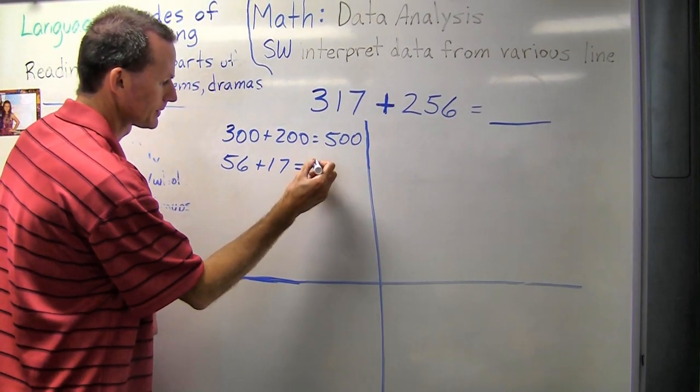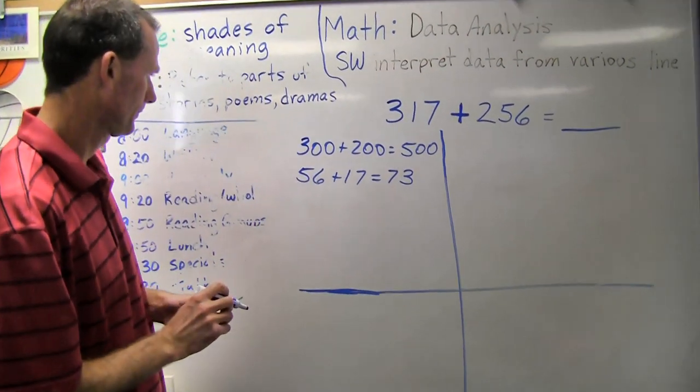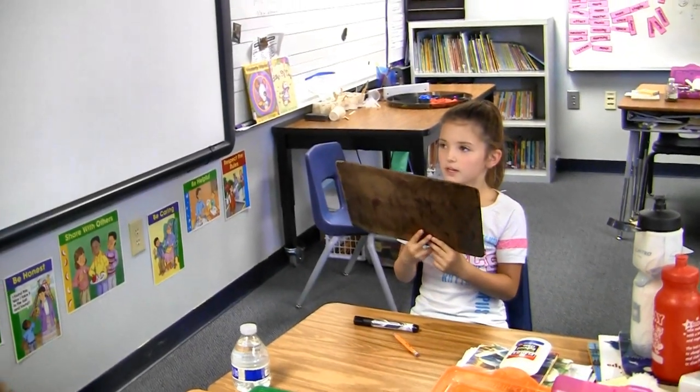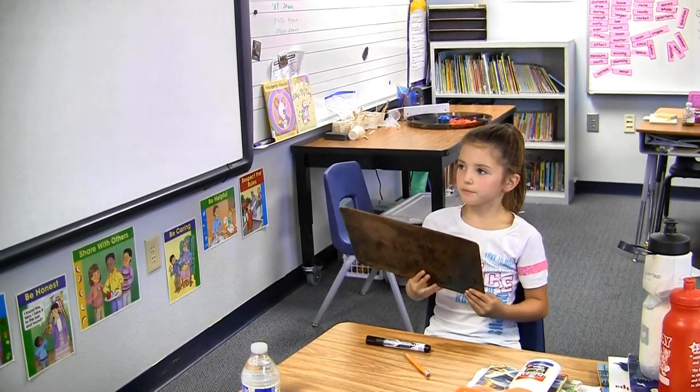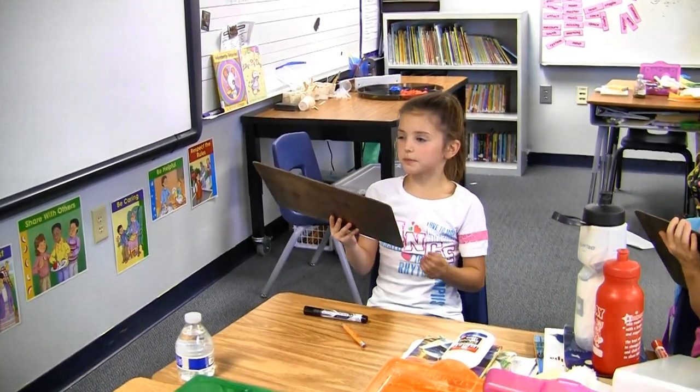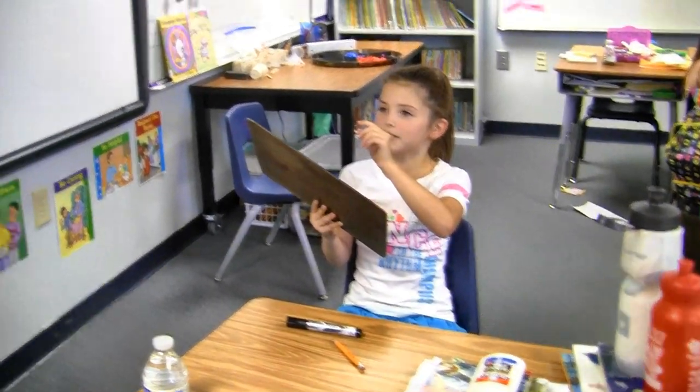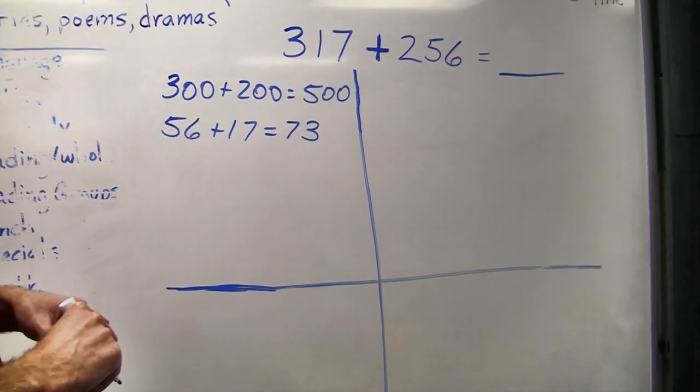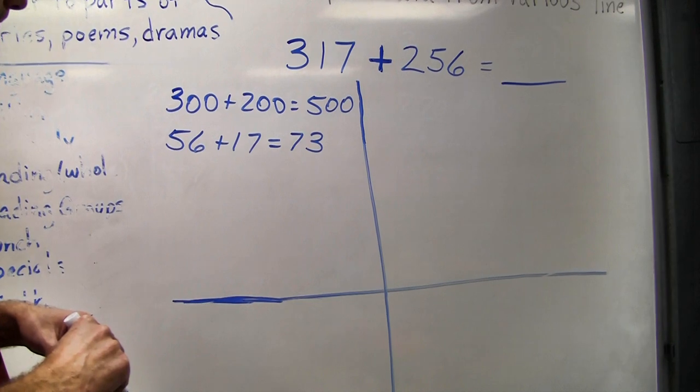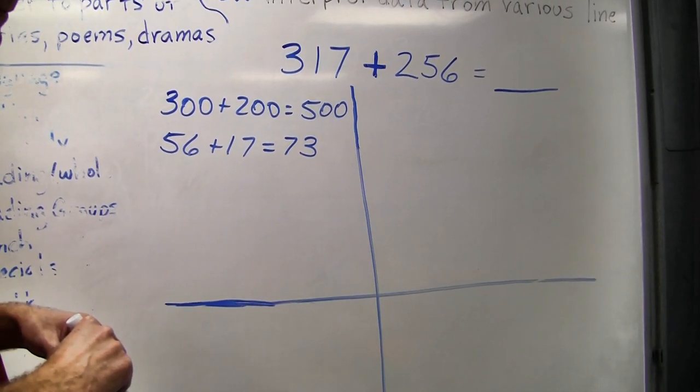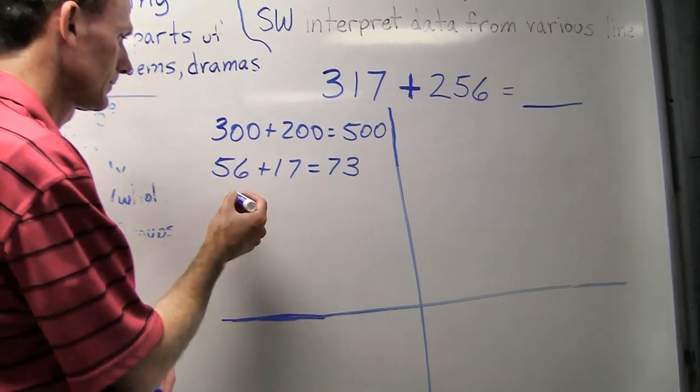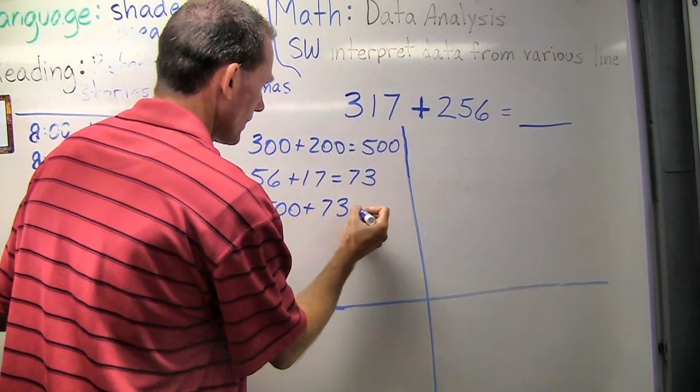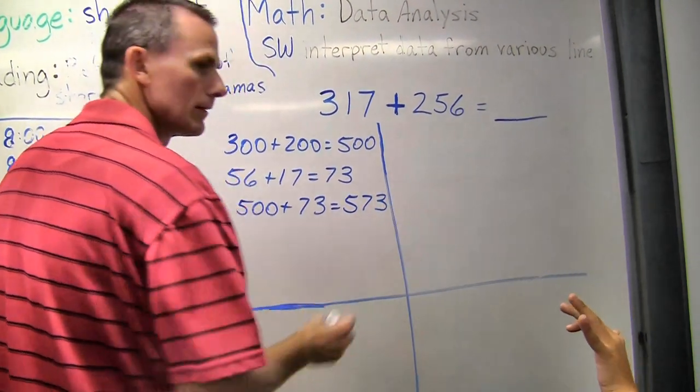Tressa, how did you know that was 73? I counted by using the standard algorithm. And what I did is 6 plus 7 equals 13. And then 5 plus 1 is 6. But then, no, 50 plus 10 is 60. But there's another 10 from the 13 that we counted from the 6 and the 7. So that will equal 70 and 70 plus 3 equals 73. Very good Tressa. And then I did 500 plus 73 equals 573. Excellent job. And that's my answer.